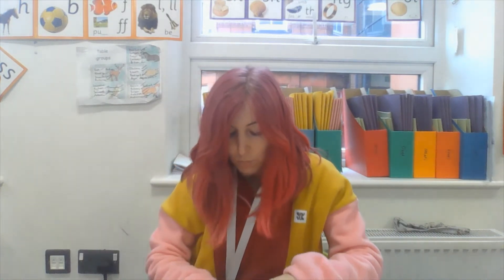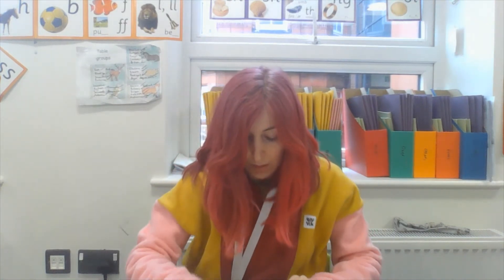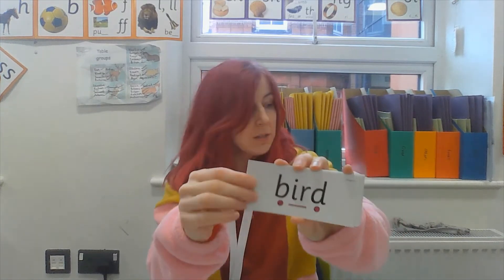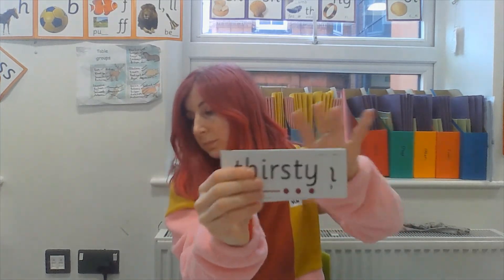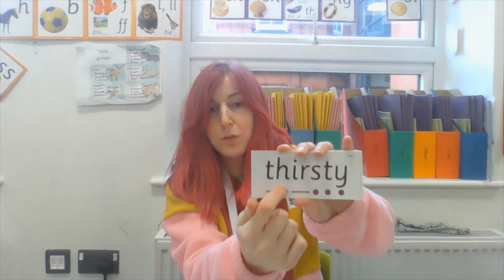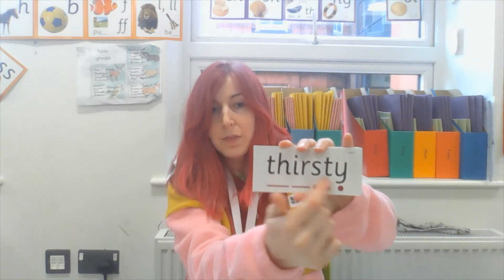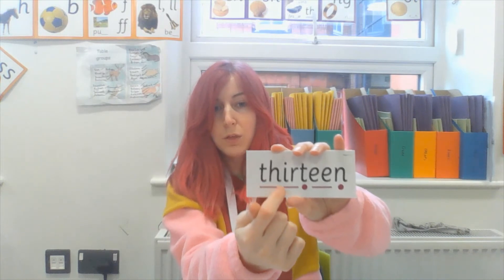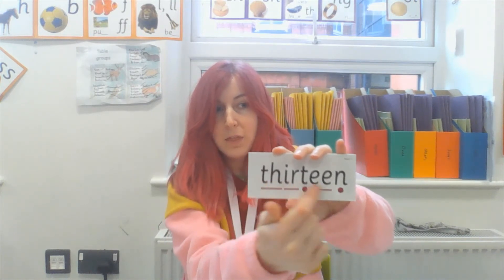Now we're going to practice reading some of these together using the sound buttons. Off we go: sh-ir - shirt. b-ir-d - bird. s-ir-s-t - thirsty. And a two-syllable one: th-ir-teen - thirteen. Great job everyone.